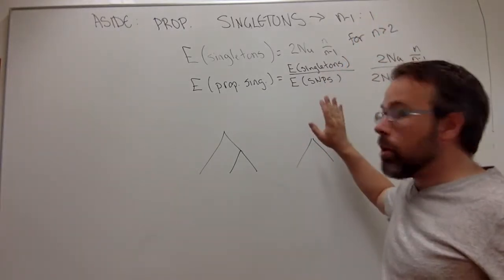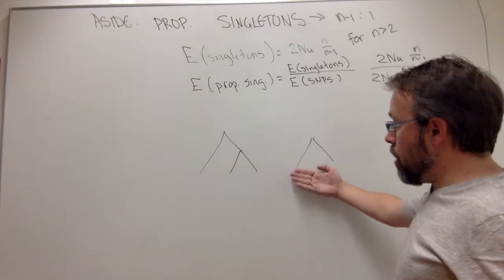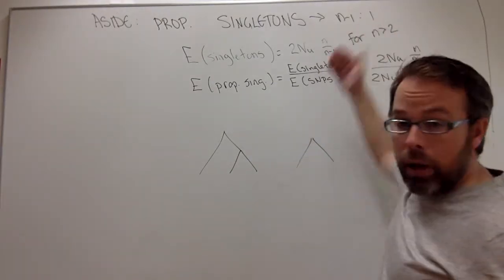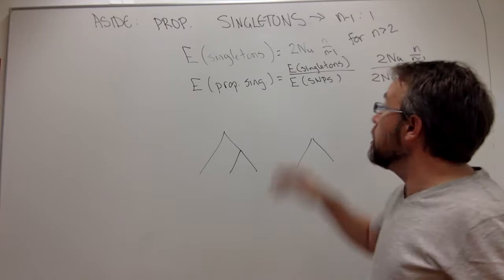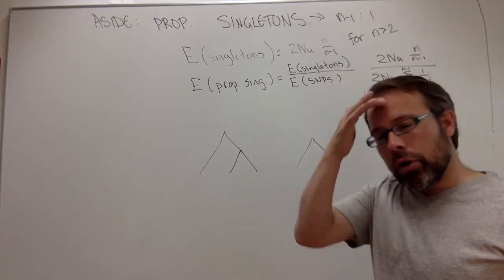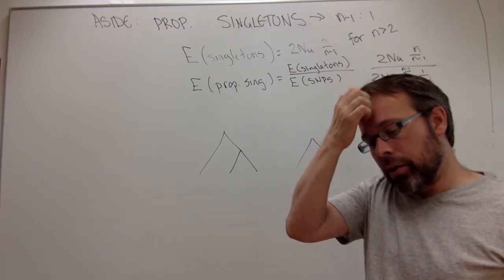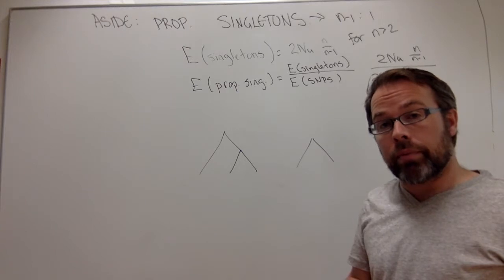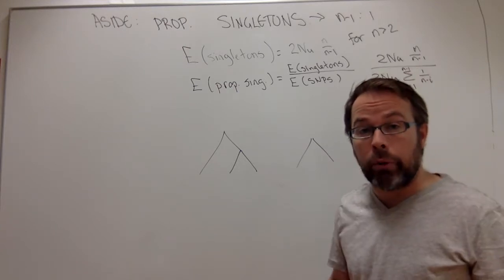It would be easy enough to derive it, basically to derive what the correction is for n equals two, or to come up with a way that would work so that we wouldn't need this. But I think for our purposes, we'll just skip it. I think it would be a good exercise if someone wants to work on it.